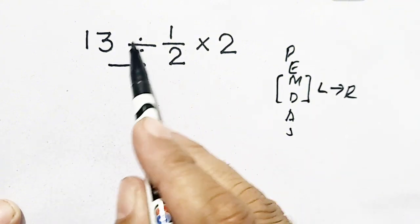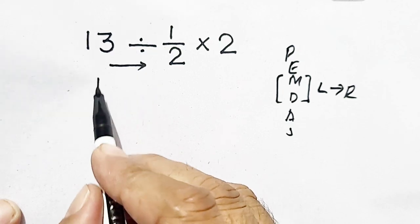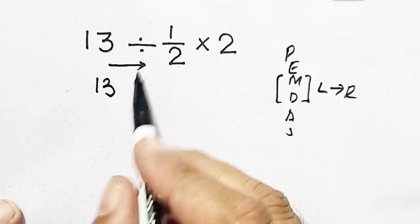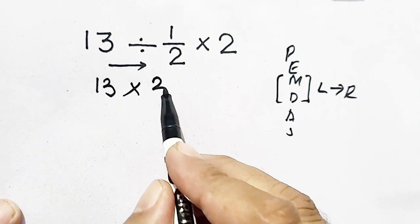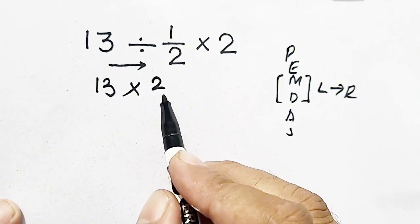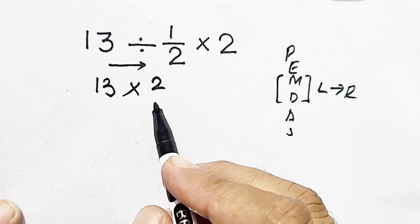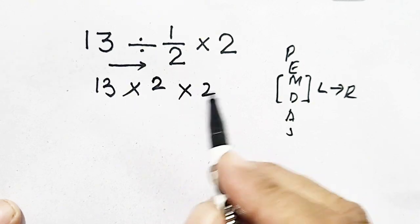Division will be performed first. So 13 divided is converted into multiplication. 1/2 is flipped, so it becomes 2 over 1. There's no need to write 1 in the denominator, times 2.